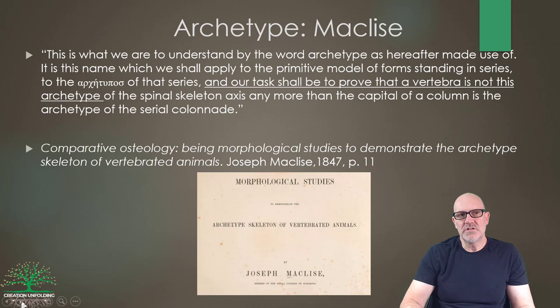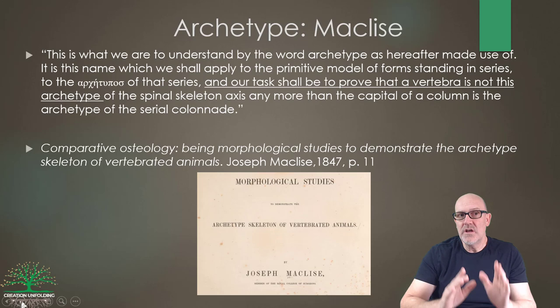We looked at the Scala Naturae from Socrates, Aristotle, and Plato — starting with the most basic forms and building up to the most complex. They all accepted some conceptual idea of that, so they had no problems with the idea of transitions. They did all believe in continuity of form. It wasn't until Darwin came along that later creationists began to reject the idea of transitions, because it smacked too much of evolution. But before Darwin, transitions were totally fine and acceptable.